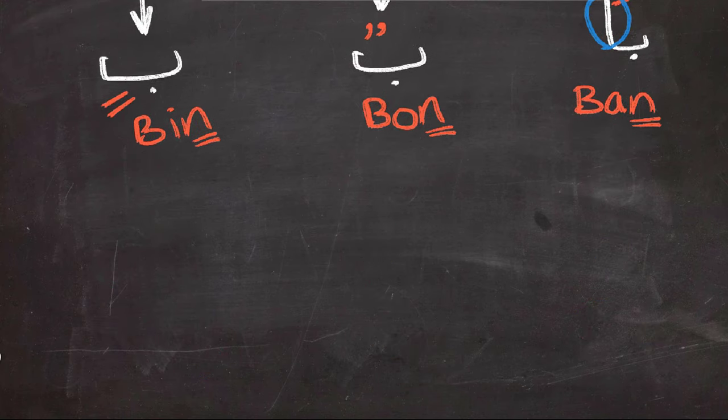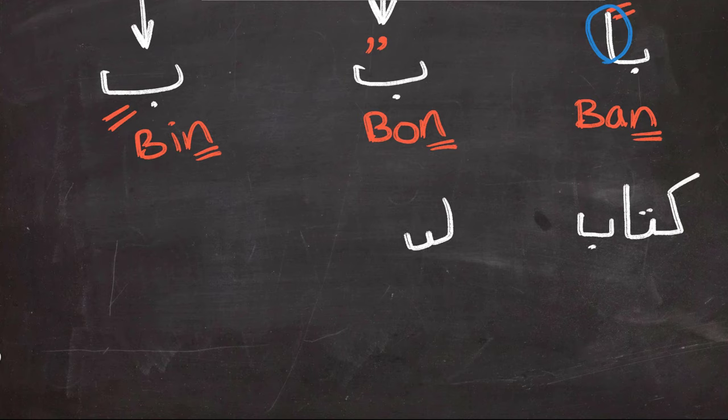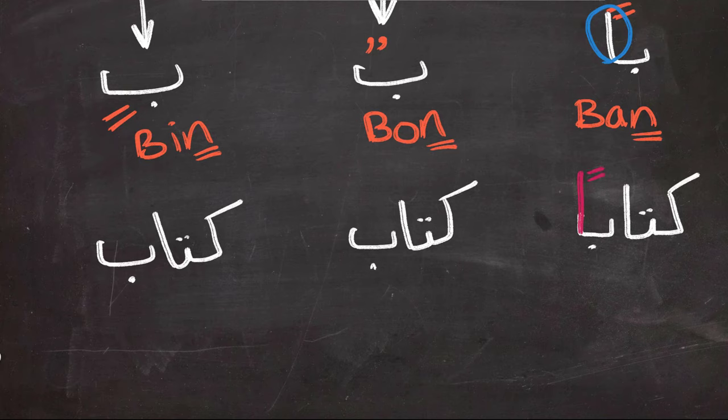How does this look with a real word? A word like Kitab, which means book. If we want to add Tanween at the end of Kitab, we have to add an Alif at the end because it is Tanween Fatha.